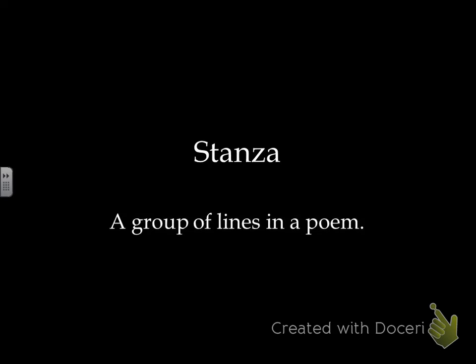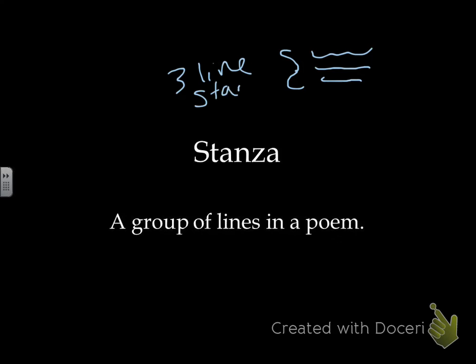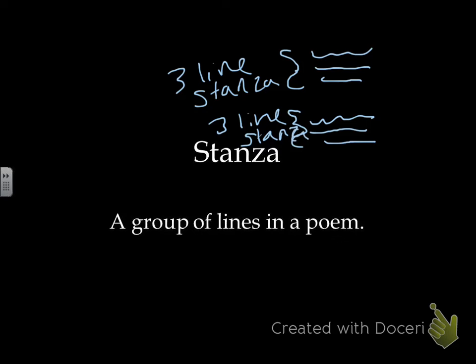A stanza in poetry is sort of like a paragraph in a poem — it's a group of lines. When you see poetry separated into different sections, like a three-line stanza, then a break, then three more lines forming another stanza, that grouping is what we call a stanza.